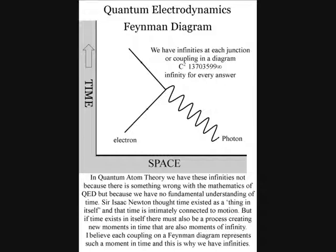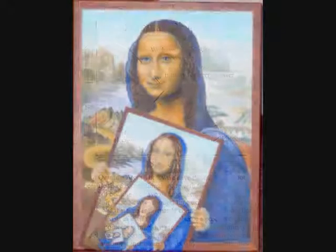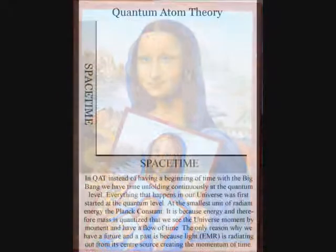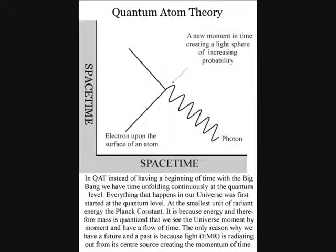Sir Isaac Newton thought time existed as a thing in itself and that time is connected to motion. But if time exists in itself, there must also be a process creating new moments in time that are also moments of infinity. I believe each coupling on a Feynman diagram represents such a moment in time, and this is why we have the infinities that have to be cancelled out by renormalisation.